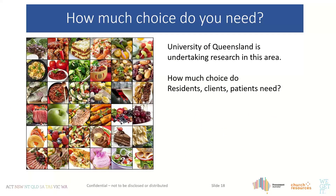How much choice do we actually need? We're researching this at the university. Residents may not need as much choice as we think — as people age, they can get tired and may prefer simplicity. The aim should be simple strategies with reliable options, and something available if residents aren't happy with the menu. Requirements can vary significantly between homes.